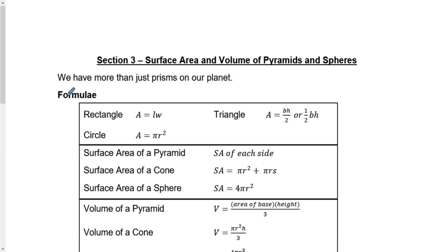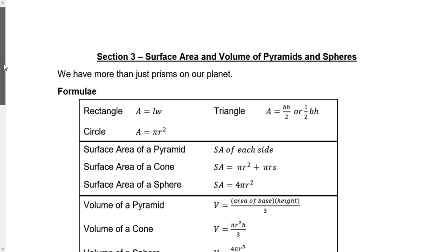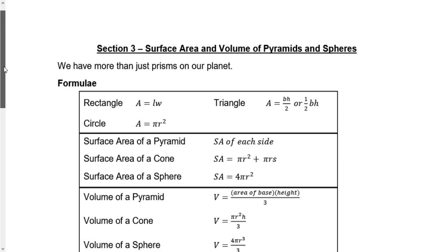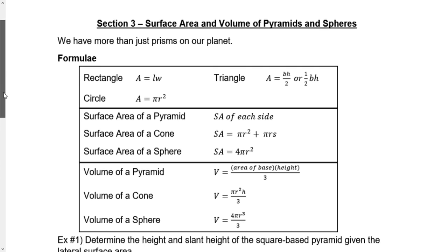We're not limited to just prisms on our planet. We also have different types — for example, we have pyramids and spheres. We also have irregular objects, but as part of the Foundations 10 curriculum, we're going to stick with what we have. So the standard formulas of the basic shapes — rectangular, triangle, and circle — are always going to be used.